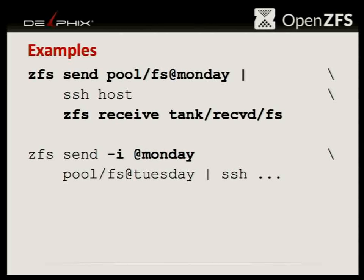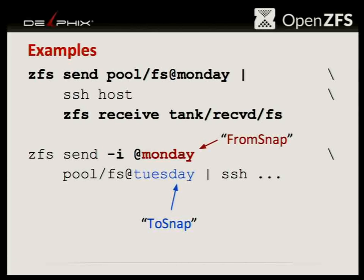Here's an example showing the commands you'd run. The first example shows doing a full send, where you're sending the entire contents of the snapshot. You can send it over SSH and receive it into another storage pool. For an incremental, you use the dash-i flag. Here we're saying we've already sent Monday, so send an incremental based on Monday to Tuesday. In terms of terminology, I call this the from-snap and the to-snap.